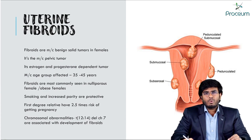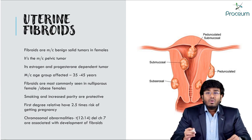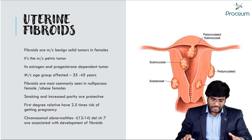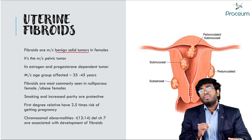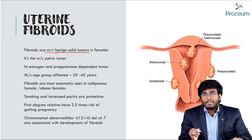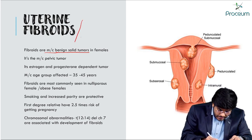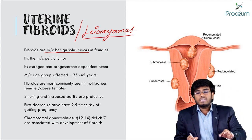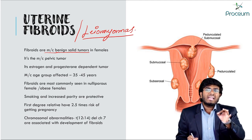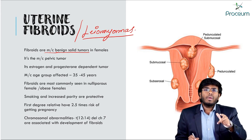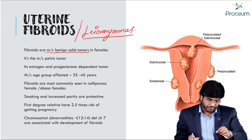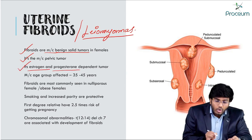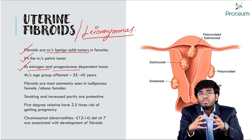In this video, let's discuss uterine fibroids. Uterine fibroids are benign solid tumors in females — the most common benign solid tumors in females. They are also known as leiomyomas. They are tumors of the myometrium, the most common pelvic tumors in females, and they are estrogen and progesterone dependent tumors — their development and growth depend on estrogen and progesterone.